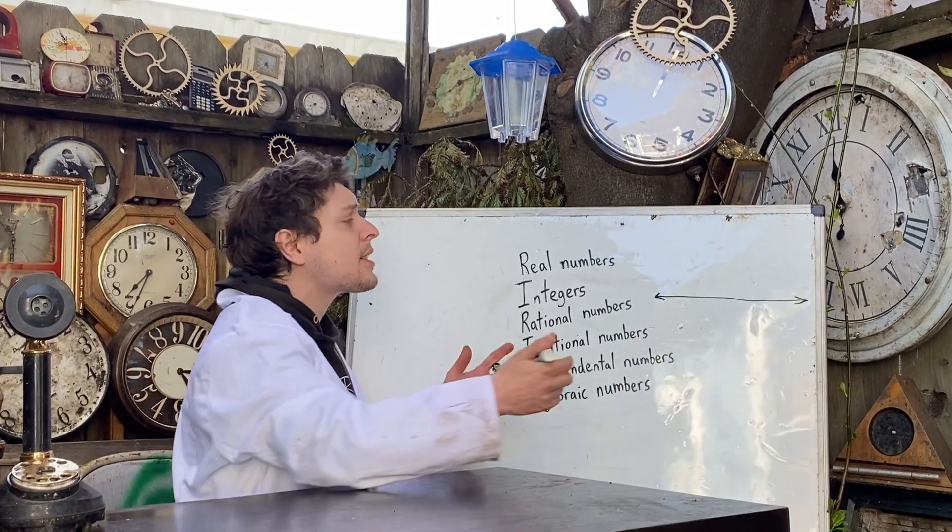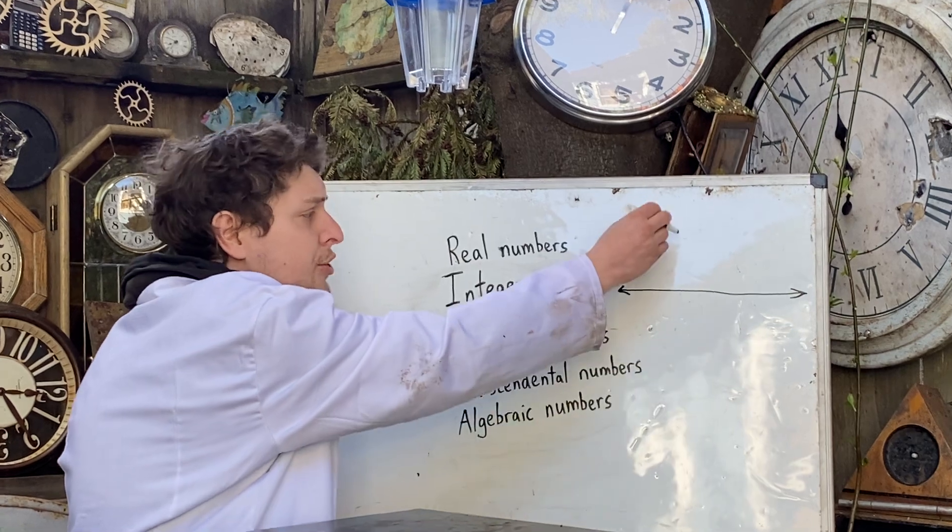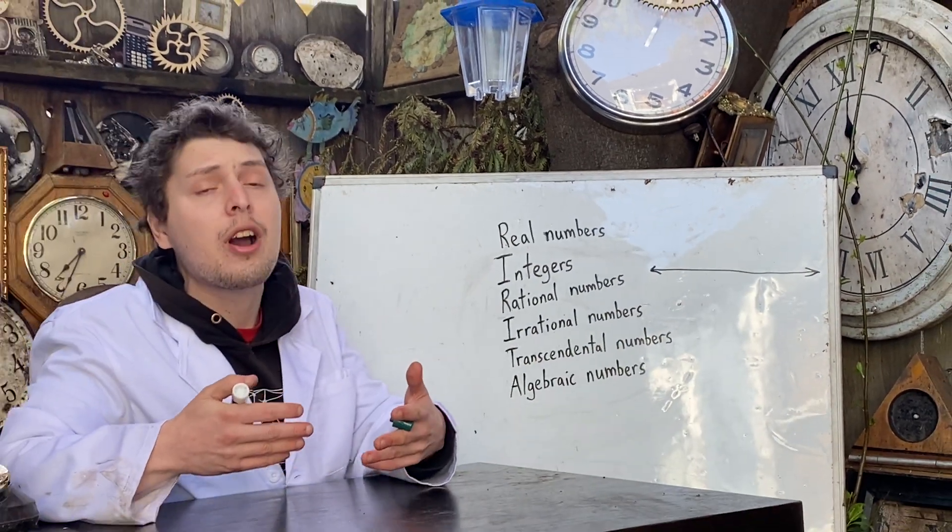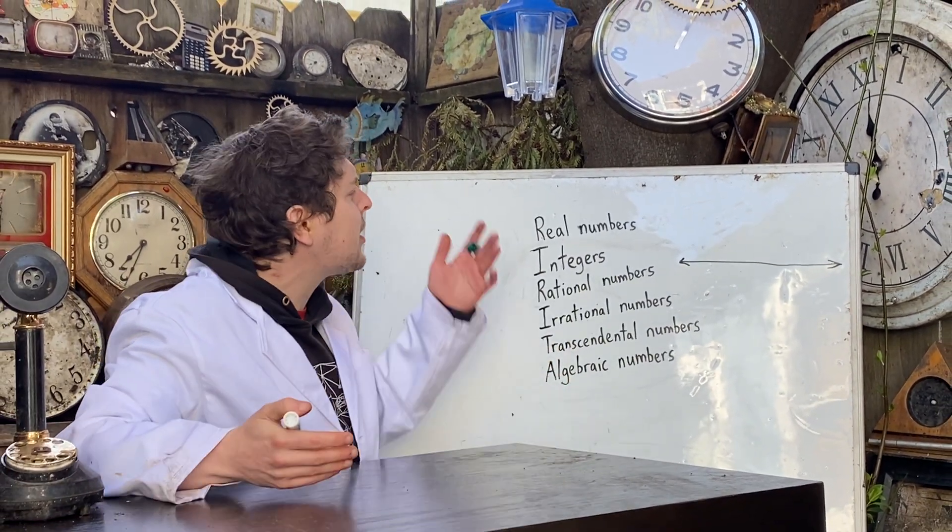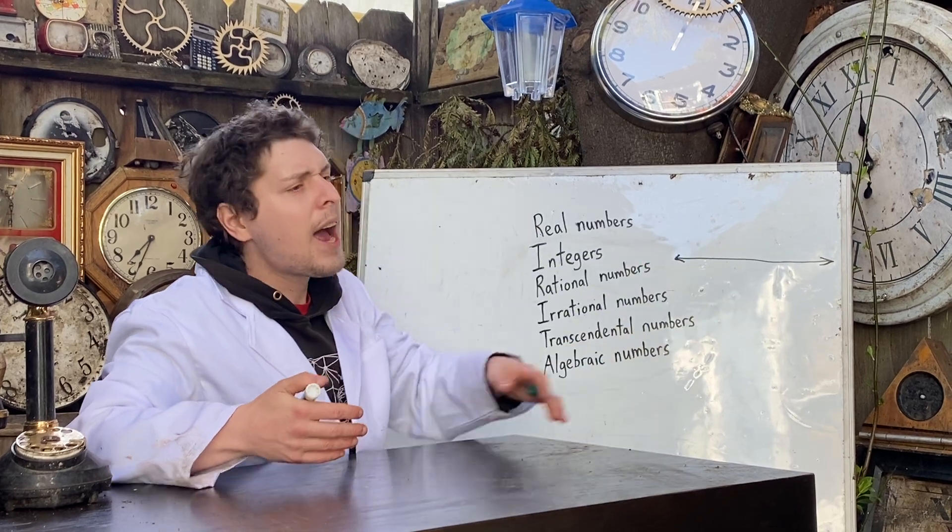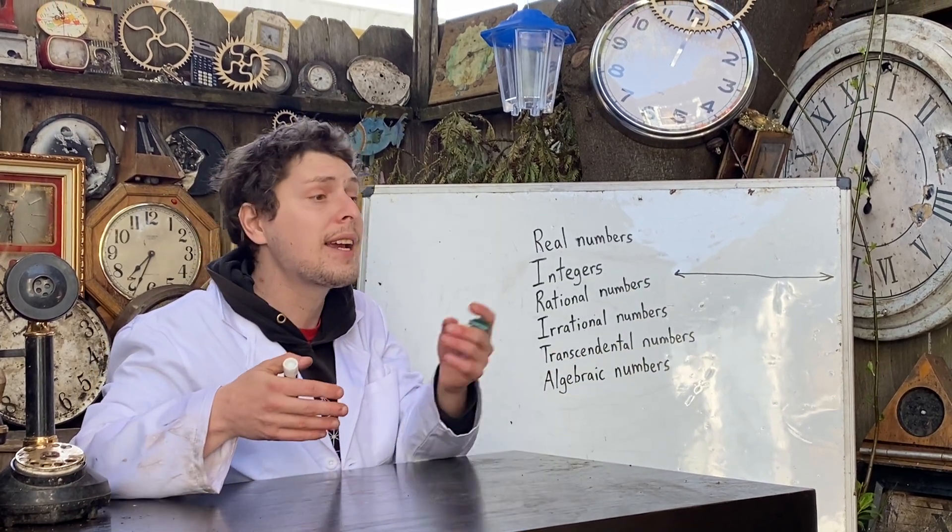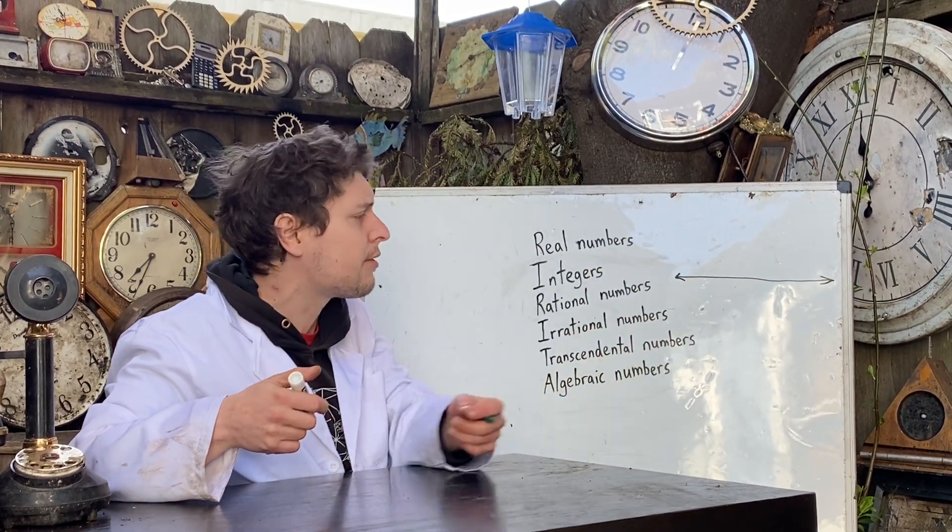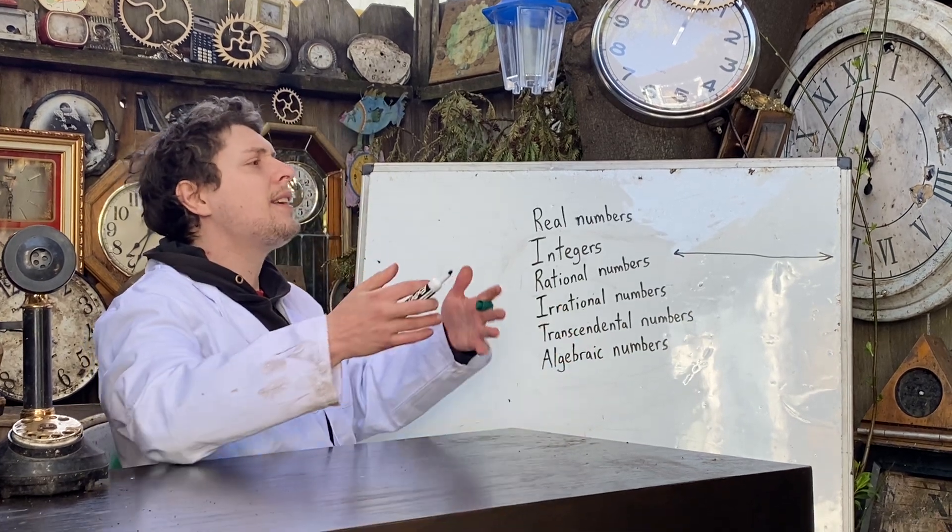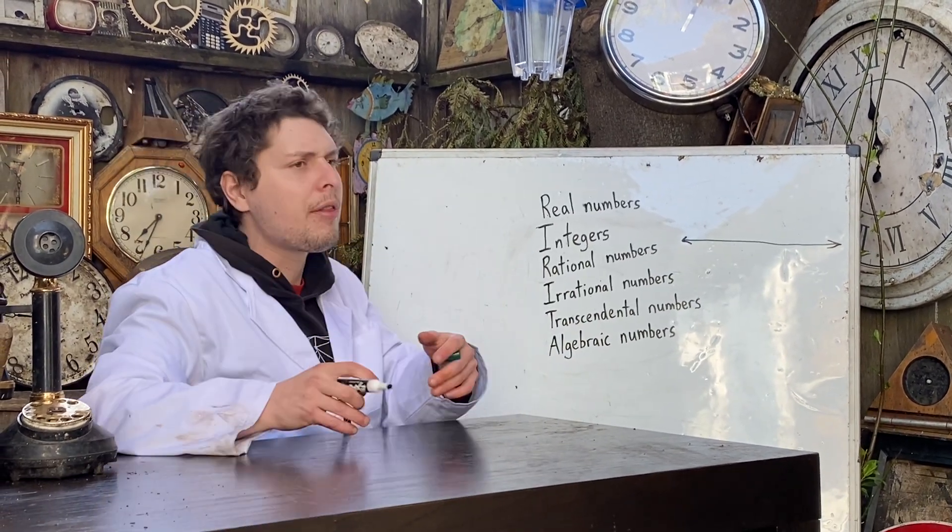Sometimes we will need to step out another dimension from here to what's known as the complex numbers that include the real numbers, as well as imaginary numbers like i and combinations of those. And sometimes we may even need to step further beyond that.